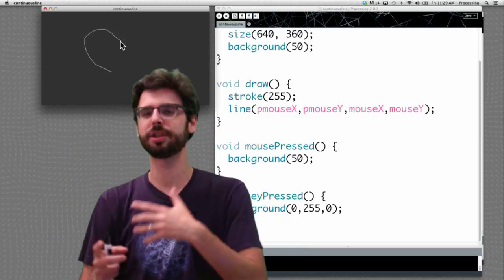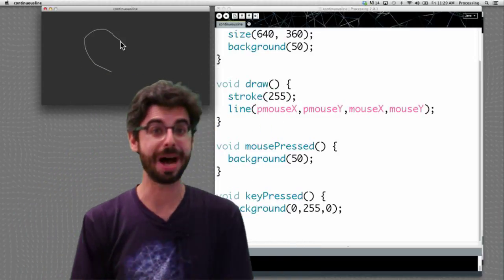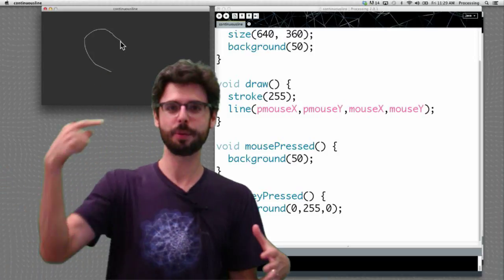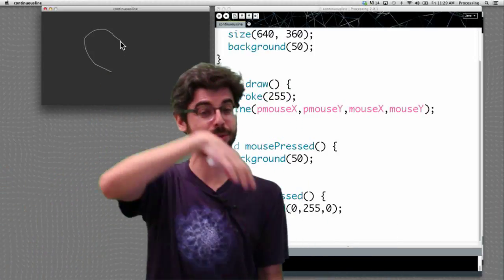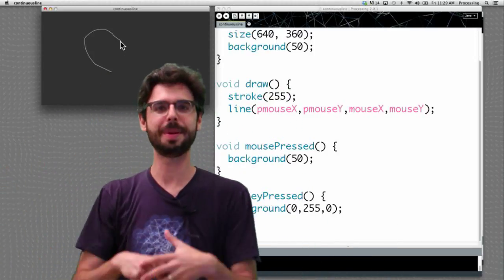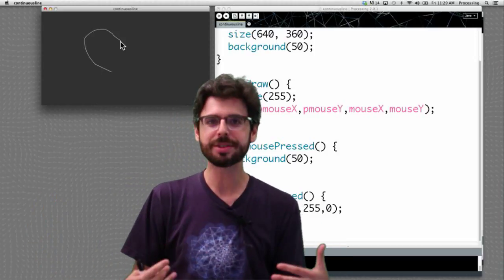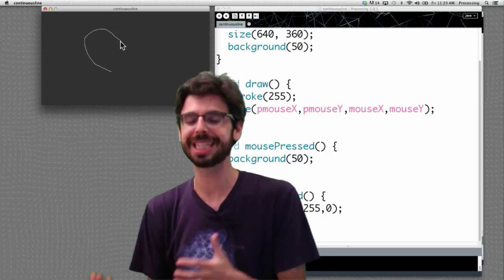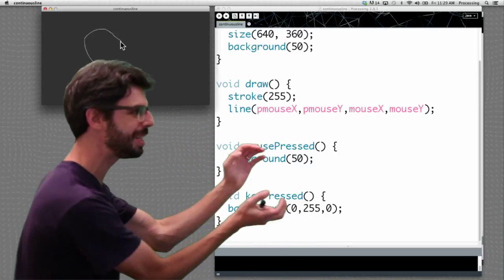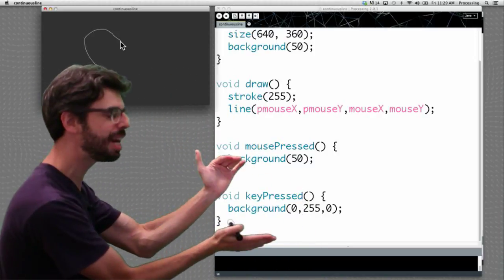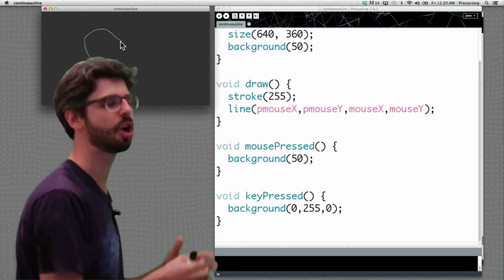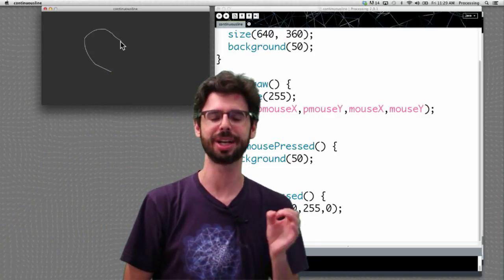We're going to see later how do you do something when a specific key is pressed. There's also a mouse released event - when the mouse is pressed, an event is triggered. When it's released, another event is triggered. There's a mouse dragged event. You can look through the processing reference, and you'll see there are a bunch of built-in events that processing can handle for you by implementing that block of code, that function definition, and then writing the code that you want to execute when that event is triggered inside there.